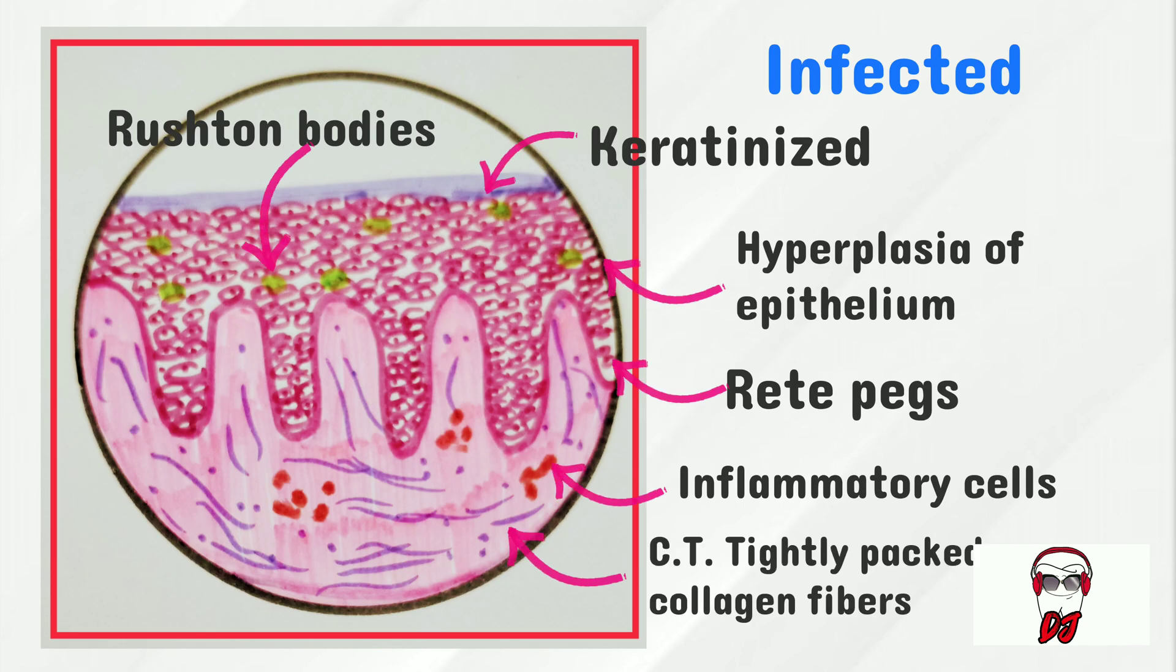In an infected cyst, the epithelium will be keratinized and go into hyperplasia due to the increased number of cells. Rushton bodies will also be present. The connective tissue will be more densely packed and more collagenized with the presence of inflammatory cells. The most distinguishing feature is the presence of rete pegs.